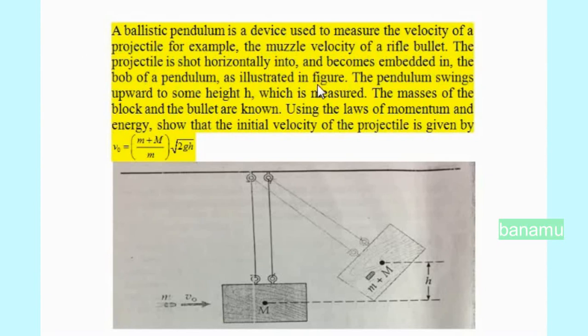As illustrated in the figure, the pendulum swings upwards to some height h, which is measured. The masses of the block and bullet are known. Using the laws of momentum and energy shows that the initial velocity of the projectile is given by V0 equals m plus M by m into root over 2gh.